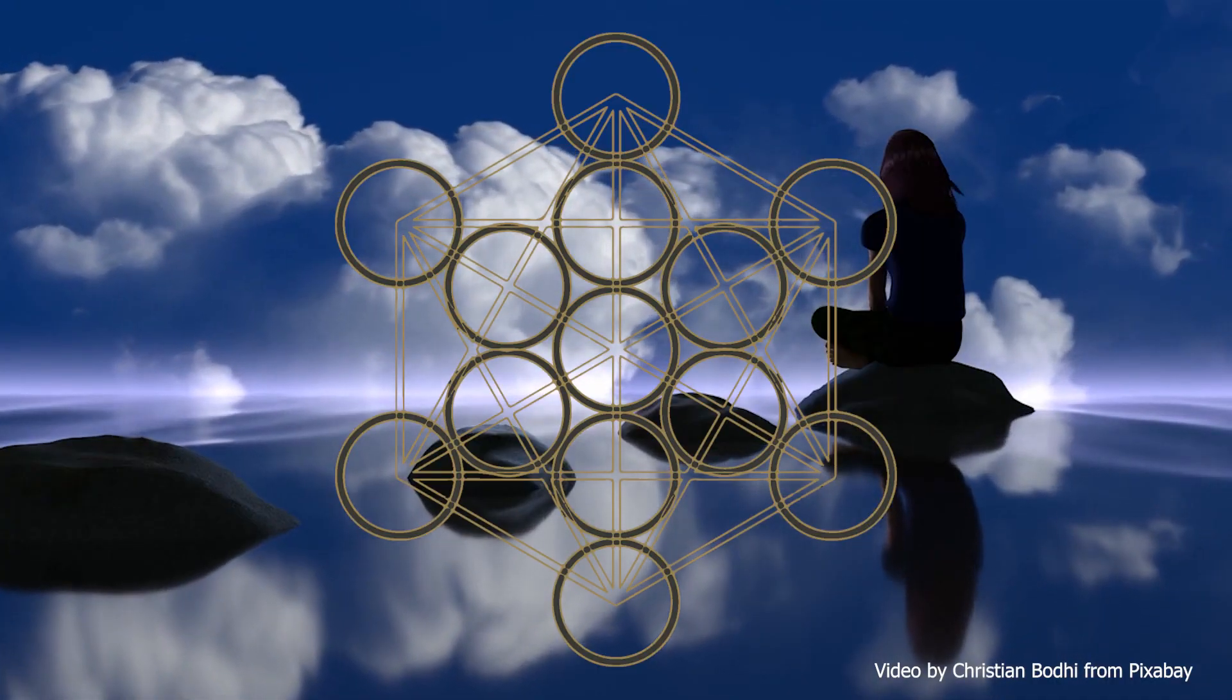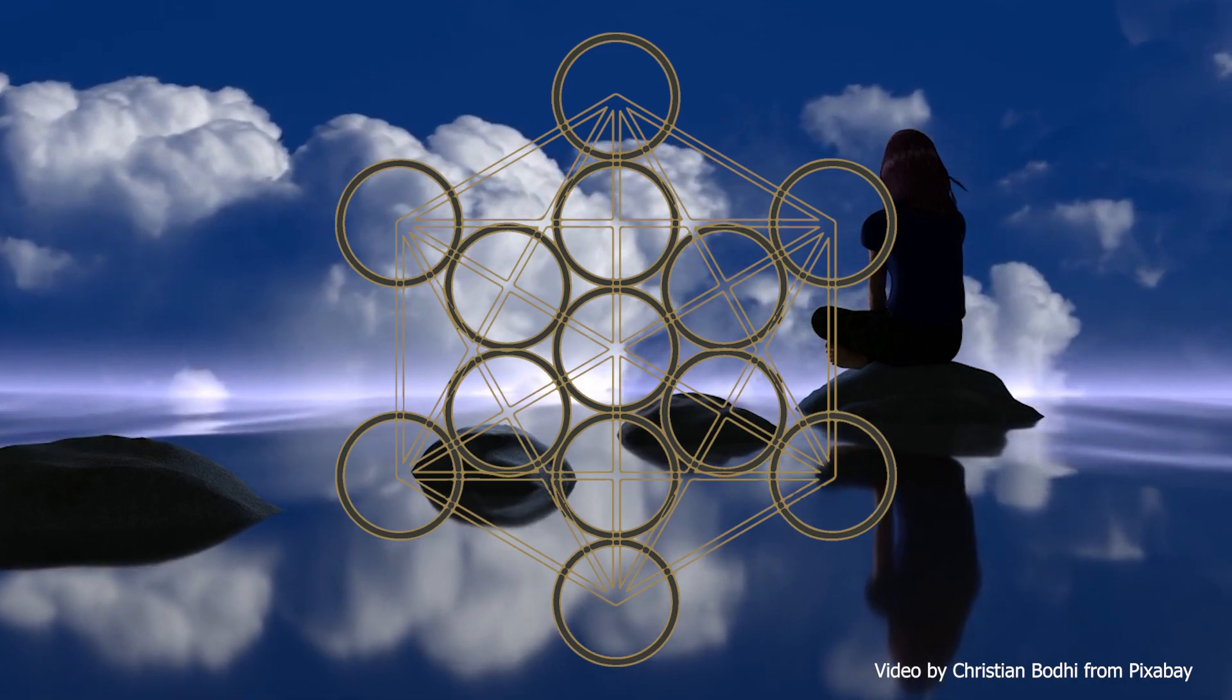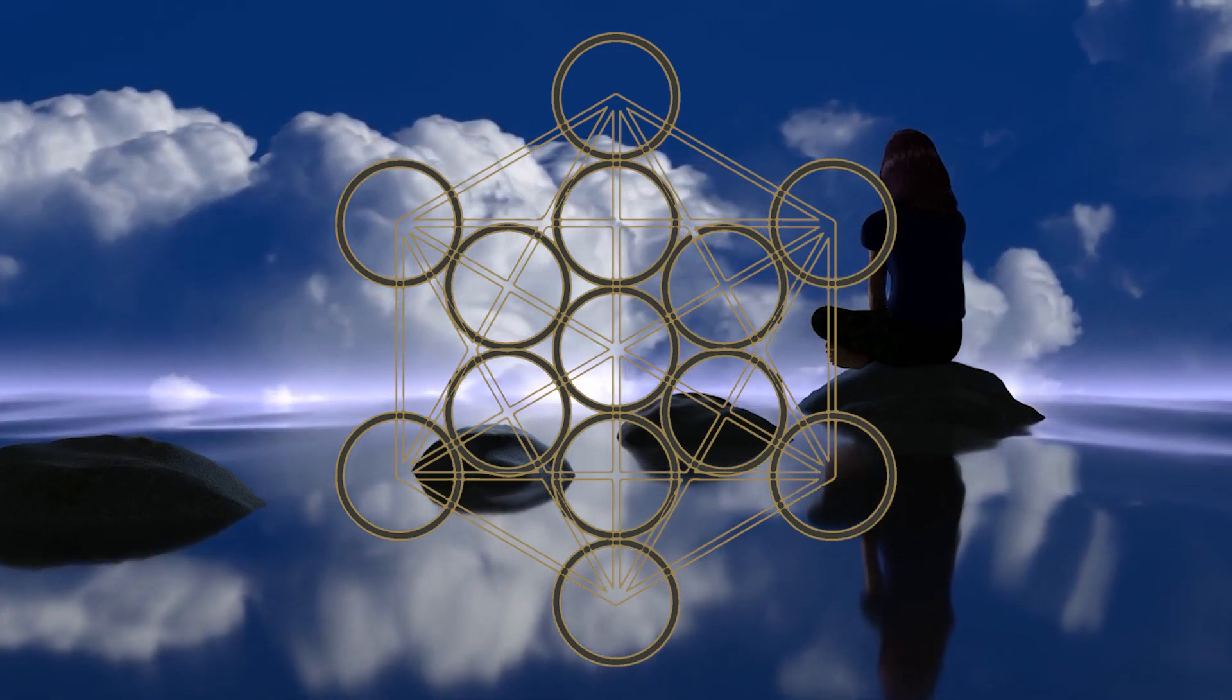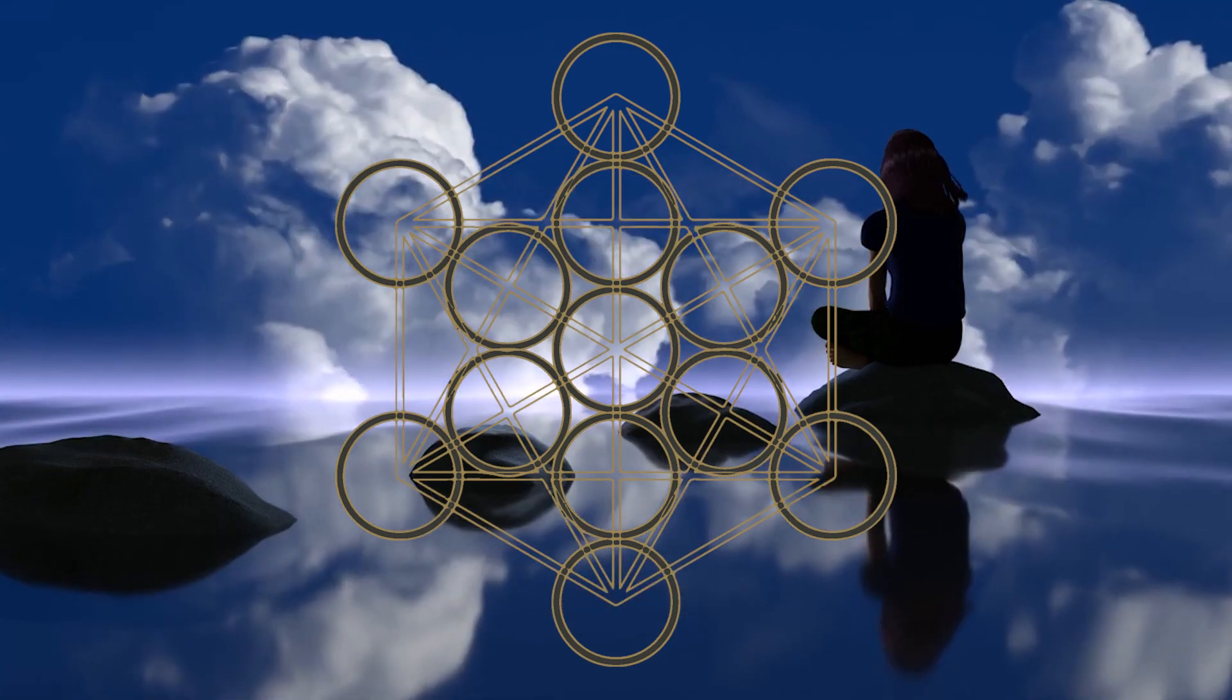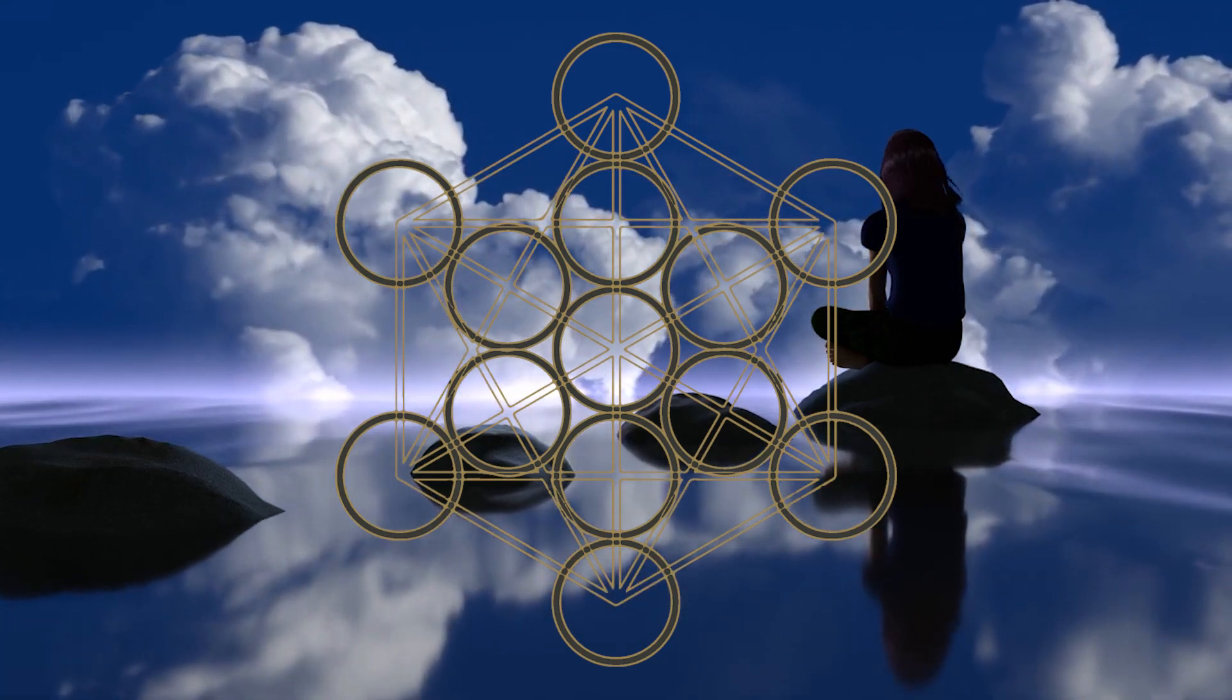The Fibonacci sequence is also found in Metatron's cube, as the ratio of the radius of the circles to the distance between their centers is the golden ratio, which is related to the Fibonacci sequence.